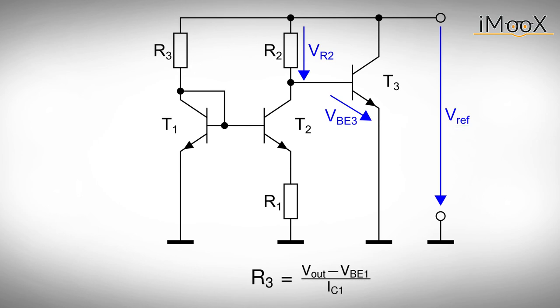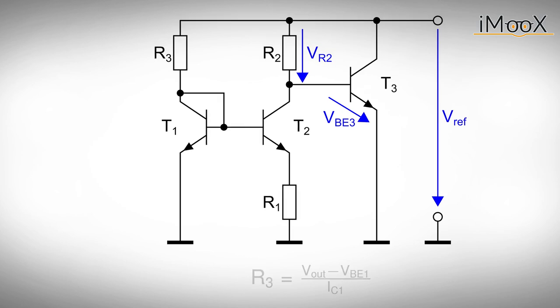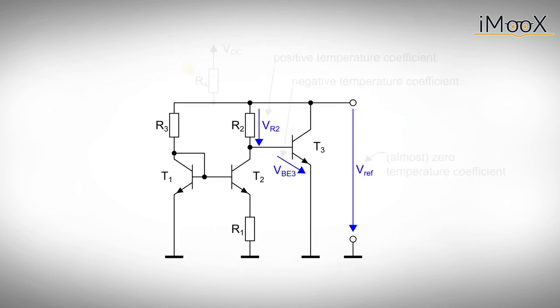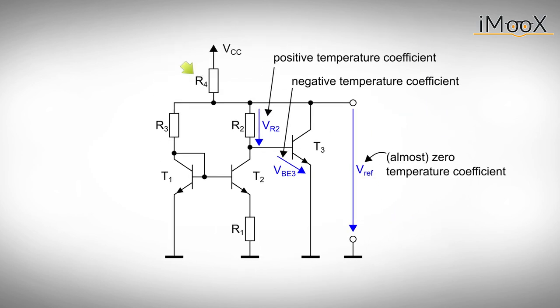But our circuit still needs to be supplied. To keep things simple, we use resistor R4 connected between the supply and our voltage reference. These circuits are called band gaps because for zero temperature coefficient the output voltage is about 1.2 volts, which is close to the silicon band gap voltage at 0 Kelvin.